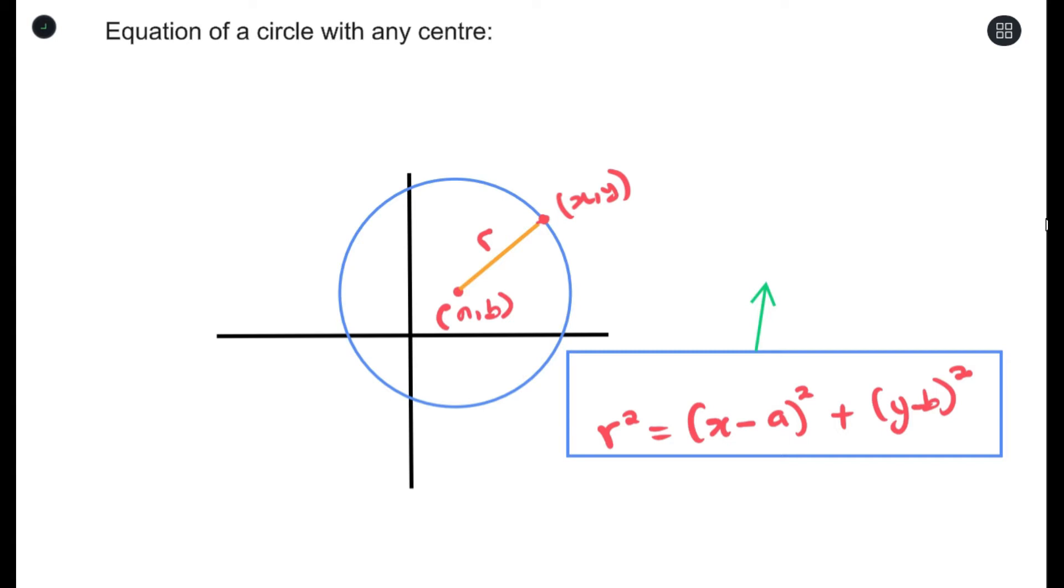r-squared equals (x-a)² plus (y-b)², where a and b represents the coordinates, the x and y of the center. Wherever the center of your circle is, we always represent it as a and b. So let's try out an example.